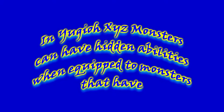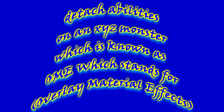In Yu-Gi-Oh, XYZ monsters can have hidden abilities when you attach monsters that have detach abilities on the XYZ monster, which is known as OME, which stands for Overlay Material Effects.